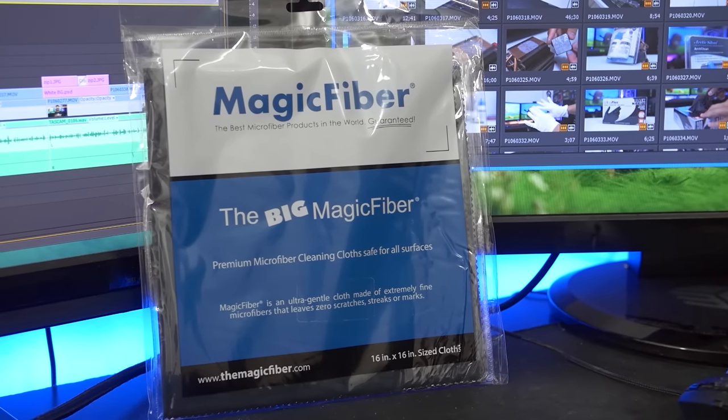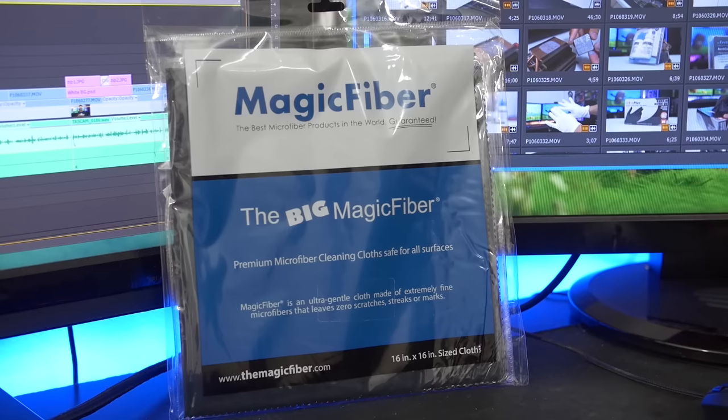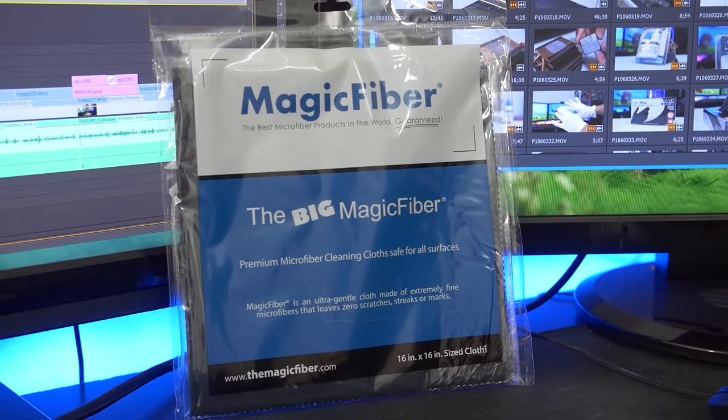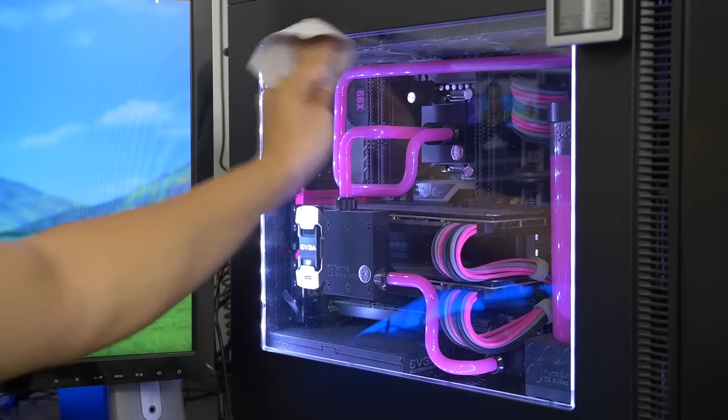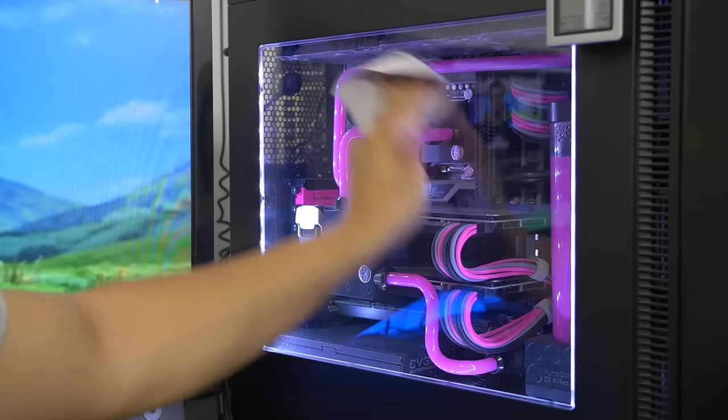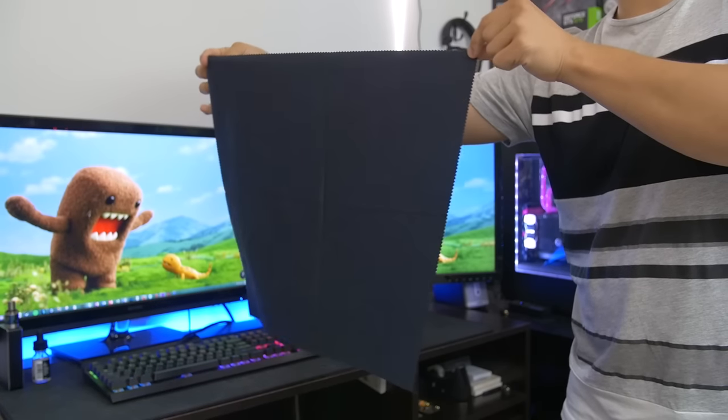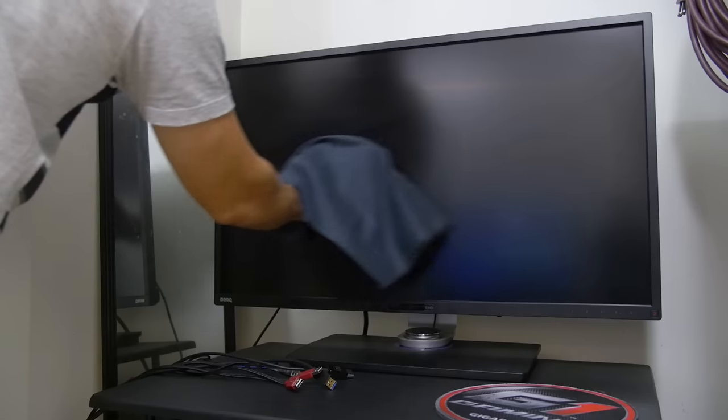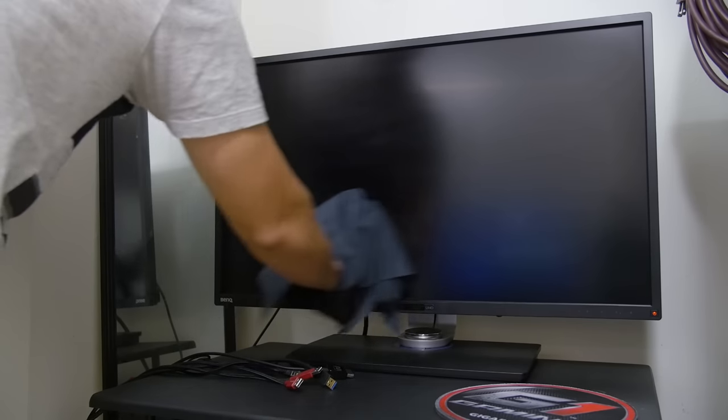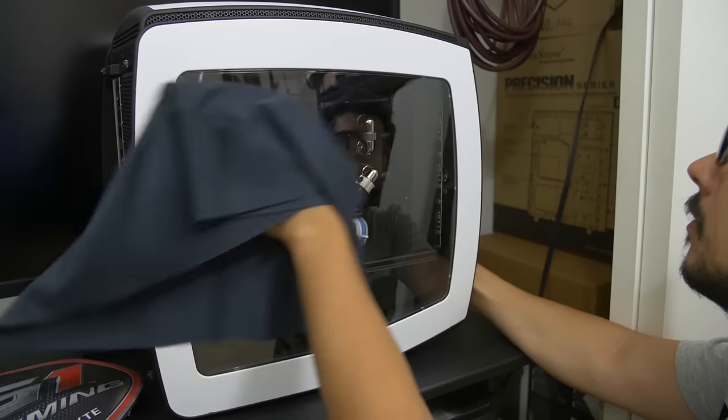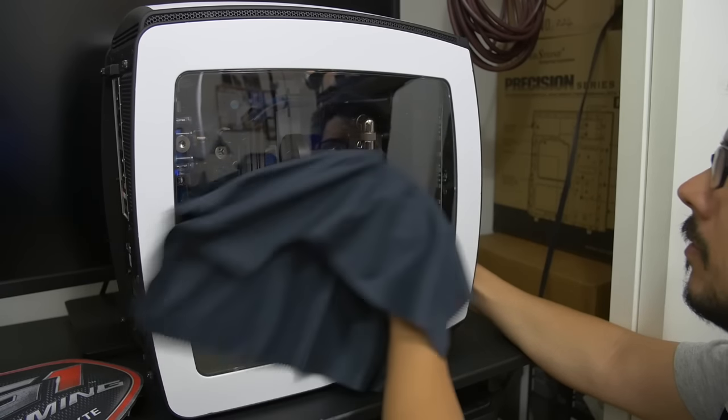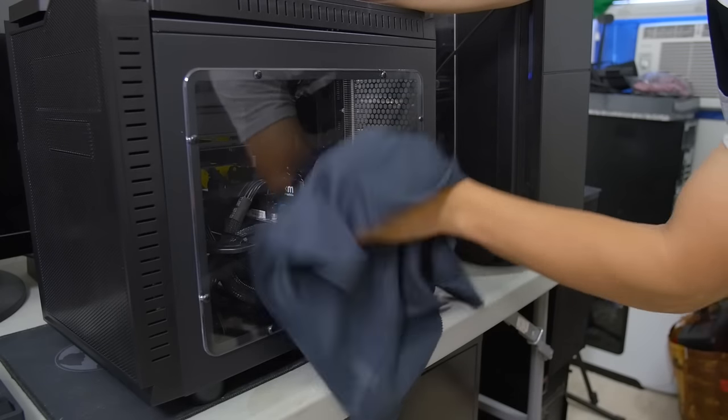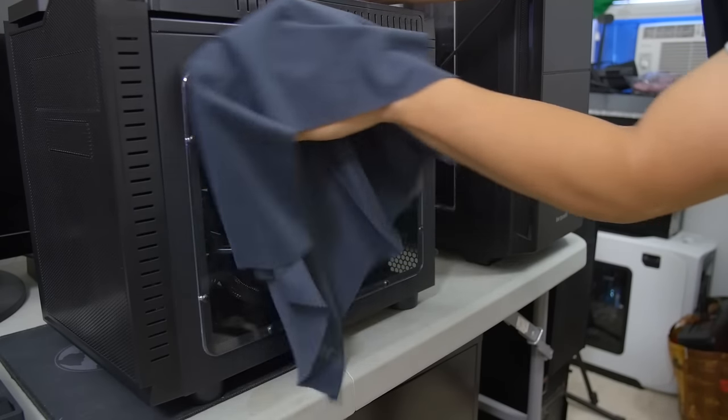This four-pack of extra-large microfiber cleaning cloths from Magic Fiber is a great solution for wiping off any eyesores on your chassis. If you're still using the tiny cloth that came with your eyeglasses to clean your case window, these 16 by 16 inch squares are calling your name. They're so big I even used them for my 32 inch monitor and my 55 inch TV. Best of all, they're extremely gentle, leaving zero scratches or streaks on even the cheapest case windows I've come across, and trust me, I've seen some pretty bad ones.